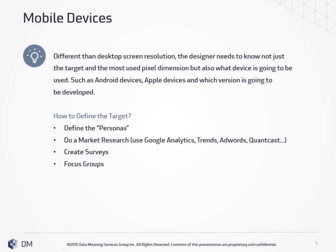So how to define the target? First of all, you need to define the personas — if it's female, male, or both — what are the ages, if it's 18 to 25, 30 plus, or if the app is for children, their interests, and the device they have. You can also do market research using Google Analytics, Trends, AdWords, Quantcast, whichever is most common for you, and also surveys and focus groups.